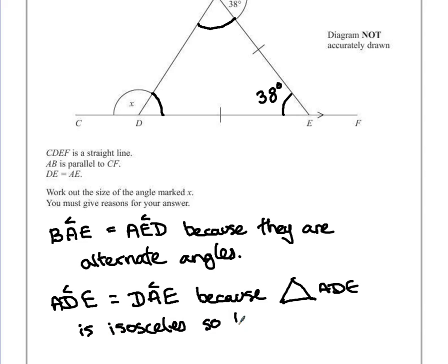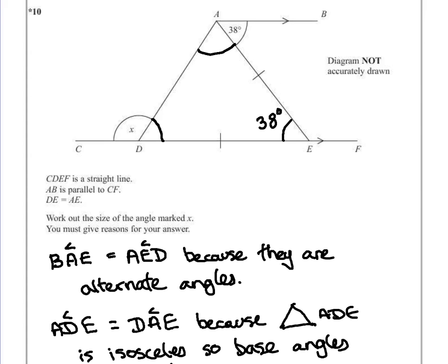So the base angles, these are the angles at the bottom of the equal length lines, are equal. That's just the second fact that we're pointing out.